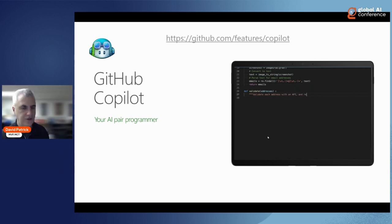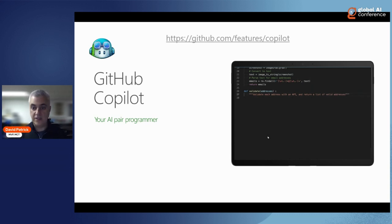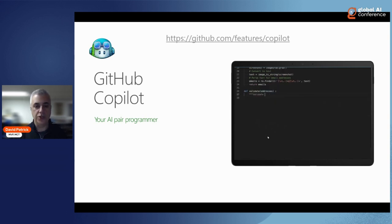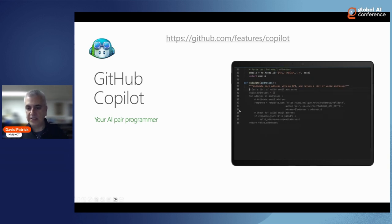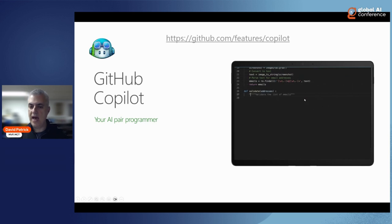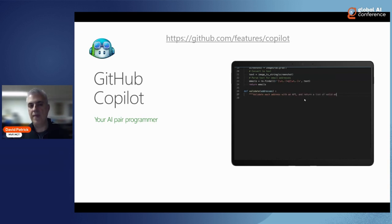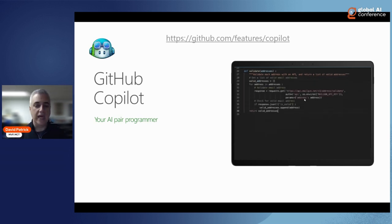Another feature is GitHub Copilot, which I've been using for a while — it's a fabulous tool to generate code. It integrates into tools like VS Code, where you can chat with it or type comments asking it to generate code. For example, I commented 'validate each address with an API while looking at a list of emails,' and GitHub Copilot responded with the proper Python function — amazing how productive this makes you when building applications.